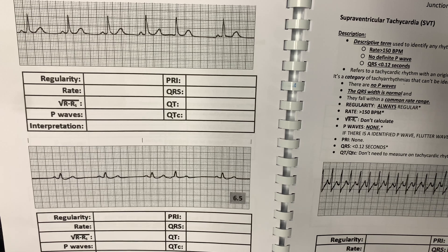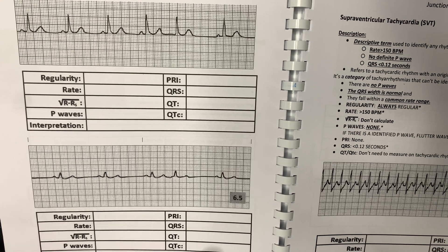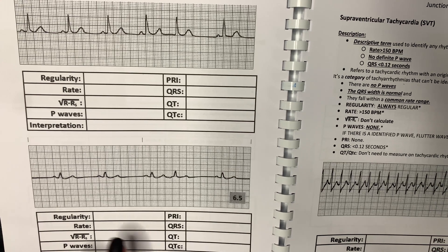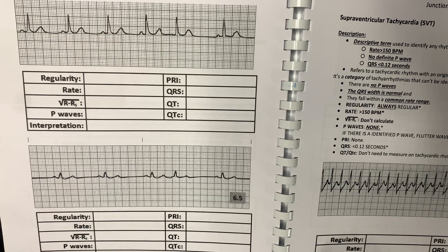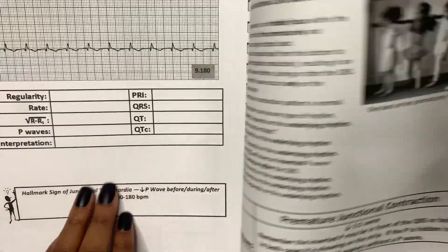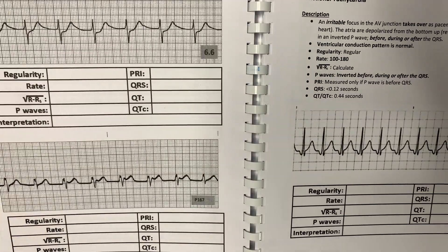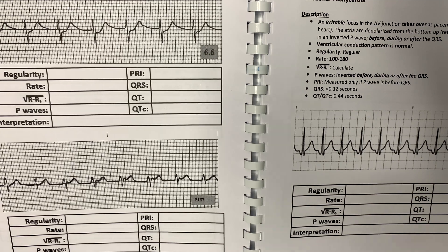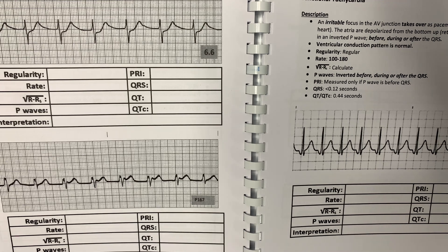When you start to see PJCs, they're not as common as PACs and PVCs, so that's something you want to alert the nurse about. Frequent PJCs can be an issue because they can turn into SVT or into a junctional rhythm, and we definitely do not want that. Especially if the patient has a history of heart issues and they're starting to have PJCs, you definitely want to alert the nurse.